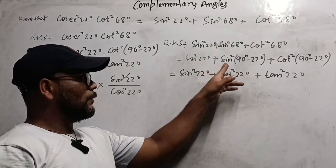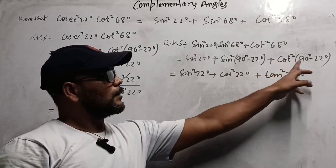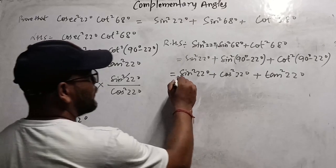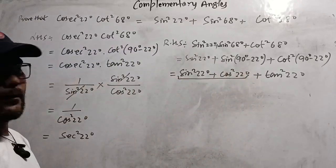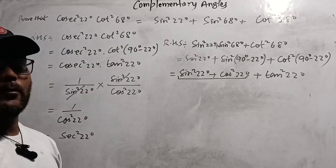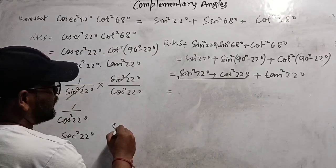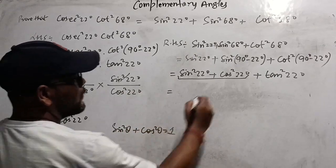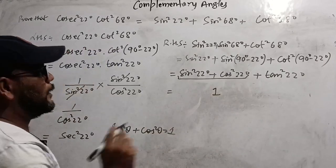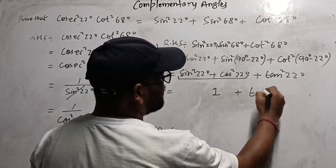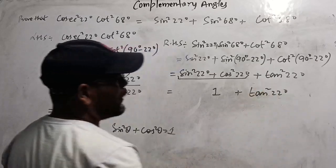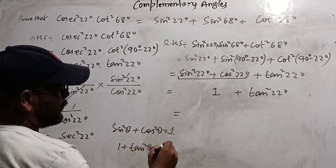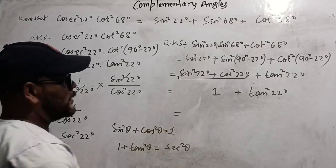After converting 68° into (90° - 22°) and applying the formulas, you get sin²22° + cos²22° + tan²22°. Using the identity sin²θ + cos²θ = 1, this simplifies to 1 + tan²22°.